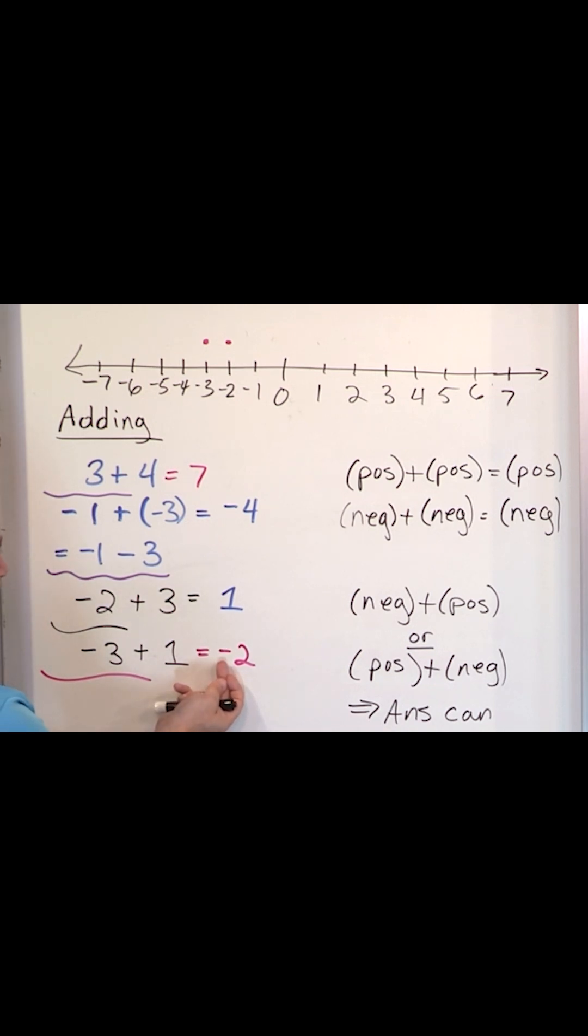Now you have to decide what the sign of this is. And you just choose the sign of whichever one of these is larger. And when I say larger, I mean whichever one's bigger absolute value. This is negative 3, this is positive 1. This is a bigger absolute value, so the sign goes to negative.